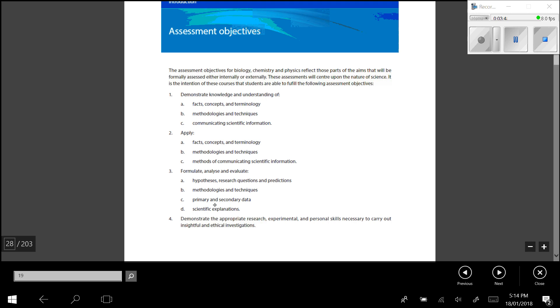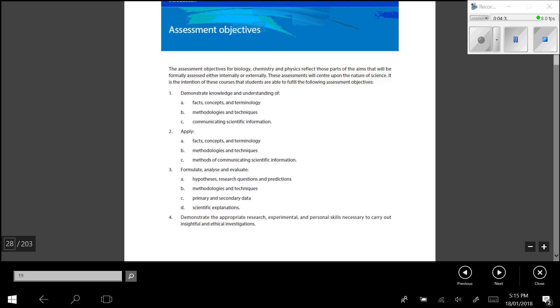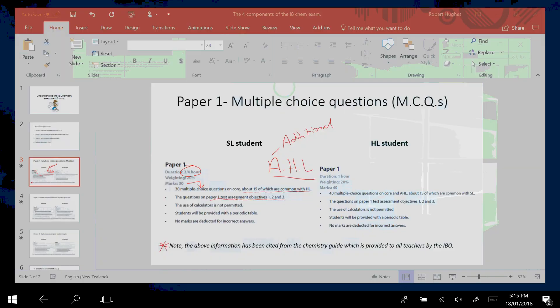So objective one here, demonstrating knowledge and understanding of facts and concepts is effectively recall. Objective two, which is applying facts and figures through maybe a calculation would be an application objective. And then objective three is where you're formulating and analyzing and evaluating. So evaluation is a great key term when you think of a higher level objective. And when I teach chemistry to my students, I try to rank my three lesson objectives based on these assessment objectives as well. And so that a student develops the ability to understand or recognize what objectives they're capable of achieving. I would say a three, four student here for objective number one. And then I would say a five to six student would be getting objective two, moving it to six to seven for objective three.